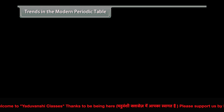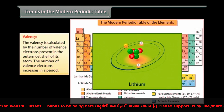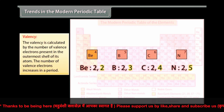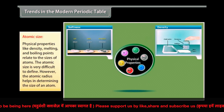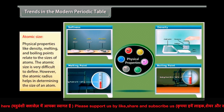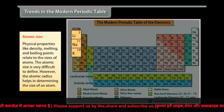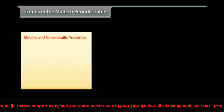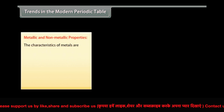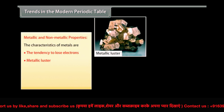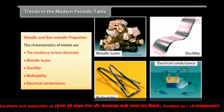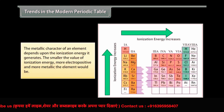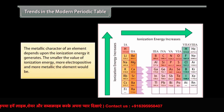Valency is calculated by the number of valence electrons present in the outermost shell of an atom, and the number of valence electrons increases across a period. The atomic size is difficult to define precisely, but the atomic radius helps in determining the size of an atom. The metallic character of an element depends upon its ionization energy: the smaller the value of ionization energy, the more electropositive and more metallic the element would be. Metals have characteristics such as ductility, malleability, and electrical conductance.